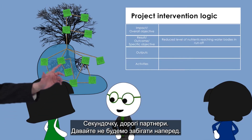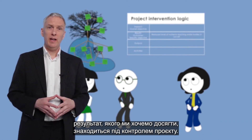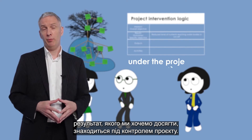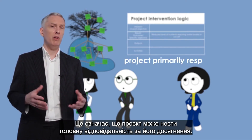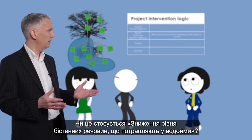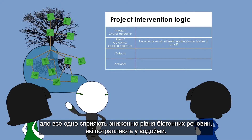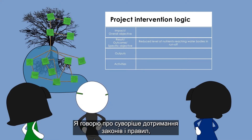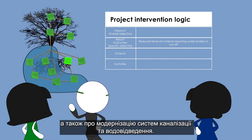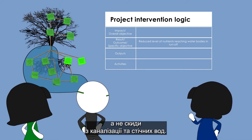One partner cautions not to get ahead of themselves: it is of key importance that the result to be achieved is mostly under the project's control — that is to say, the project can be held primarily responsible for achieving it. Is this the case for reduced levels of nutrients reaching water bodies? Probably not, since there are two important items outside their scope still contributing to this: stricter enforcement of laws and regulations, and sewage and wastewater systems being upgraded. They will address only the land-derived nutrients issue, not discharges from sewage and wastewater.